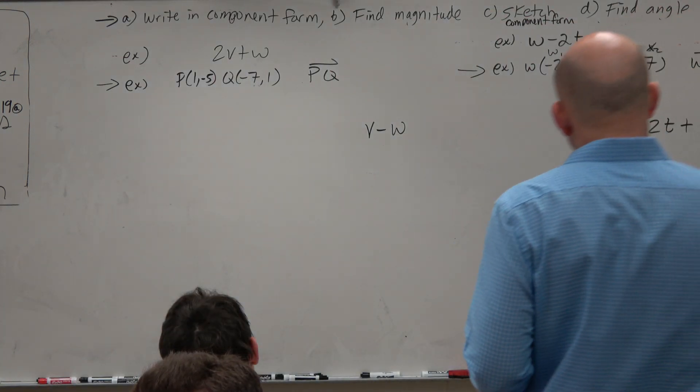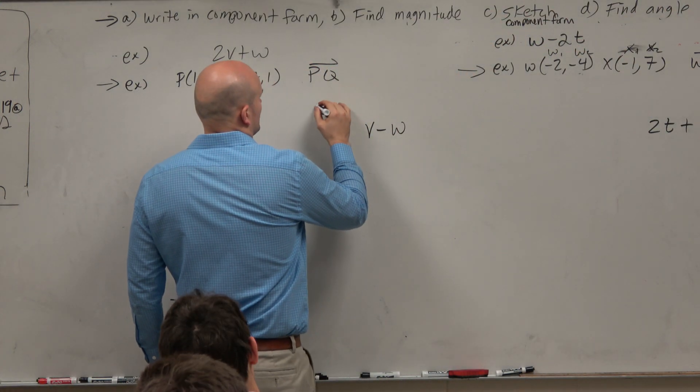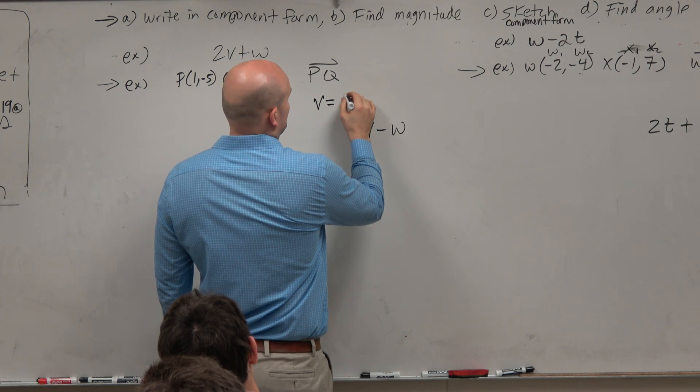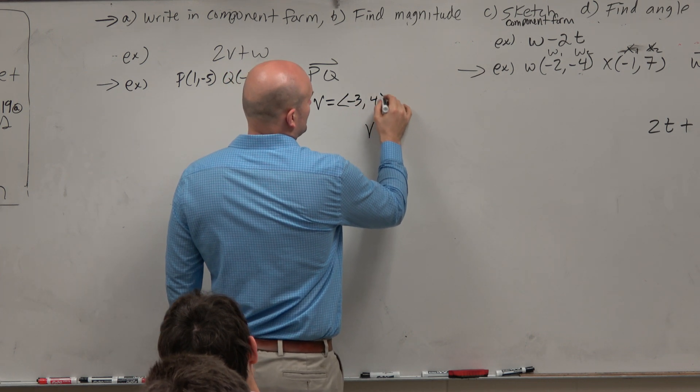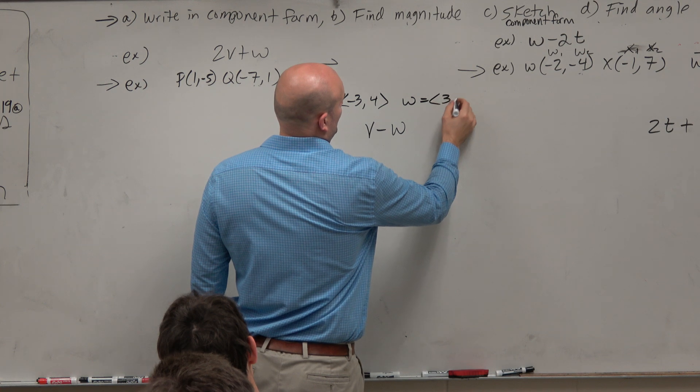So in this example, guys, we have v minus w, where v is going to be negative 3 comma 4, and w is 3 comma 1.